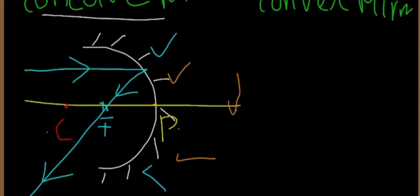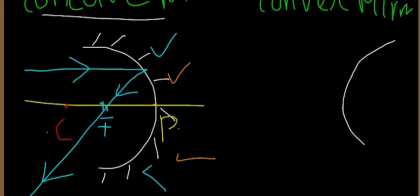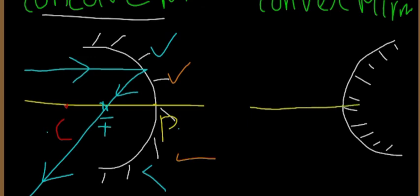Now we will draw the convex mirror. The convex mirror has its reflecting surface on the outer side, which is different from the concave mirror. The main part is the principal axis — this is a straight line through the middle portion. The middle portion of the mirror surface is called the pole. The center of curvature is also identified on the diagram.